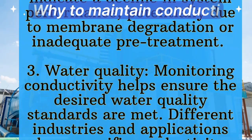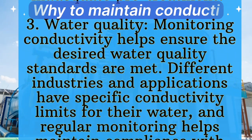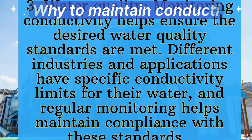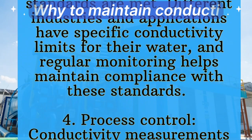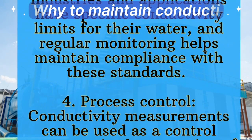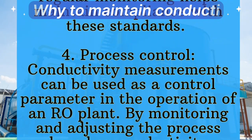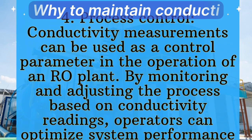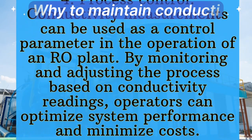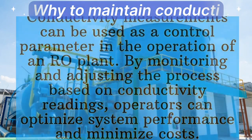Third, water quality: monitoring conductivity helps ensure the desired water quality standards are met. Different industries and applications have specific conductivity limits for their water, and regular monitoring helps maintain compliance with these standards. Fourth, process control: conductivity measurements can be used as a control parameter in the operations of an RO plant. By monitoring and adjusting the process based on conductivity readings, operators can optimize system performance and minimize costs.